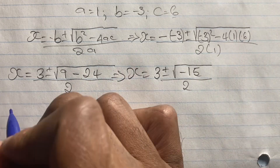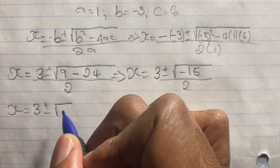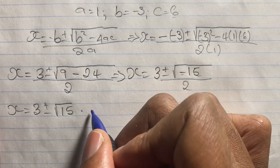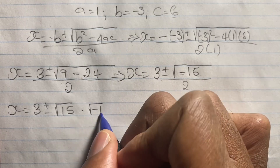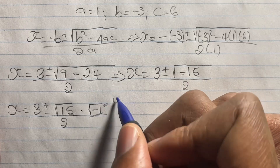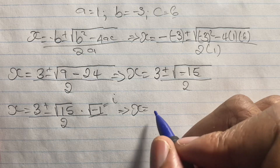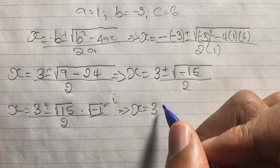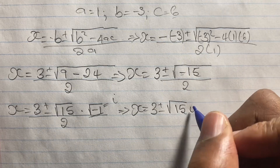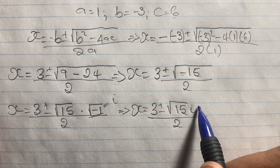Simplifying further, we factor out negative 1 from under the square root: x equals 3 plus or minus the square root of 15 times the square root of negative 1, all over 2. Since the square root of negative 1 is the imaginary number i, our solution is x equals 3 plus or minus the square root of 15 times i, all over 2.